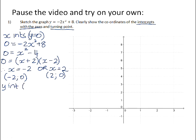To calculate the y-intercept, let x equal 0. So y equals negative 2 times 0 squared plus 8, which gives us 8. So that's the point (0, 8).